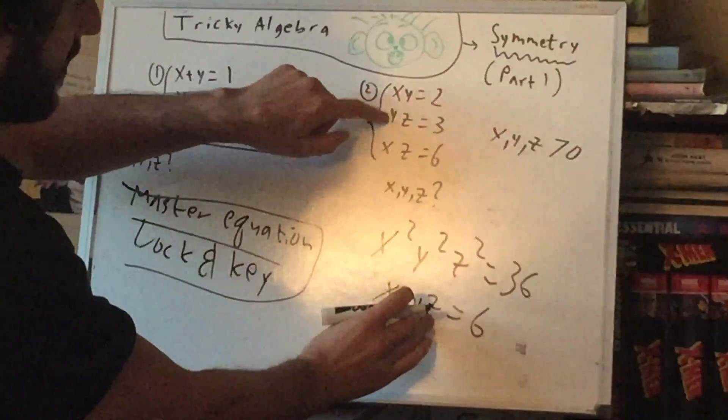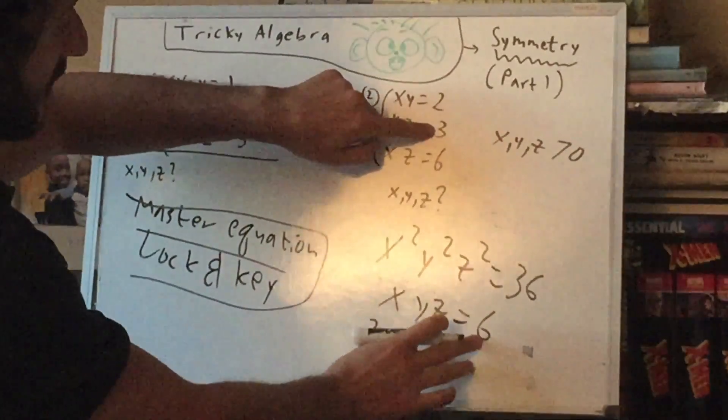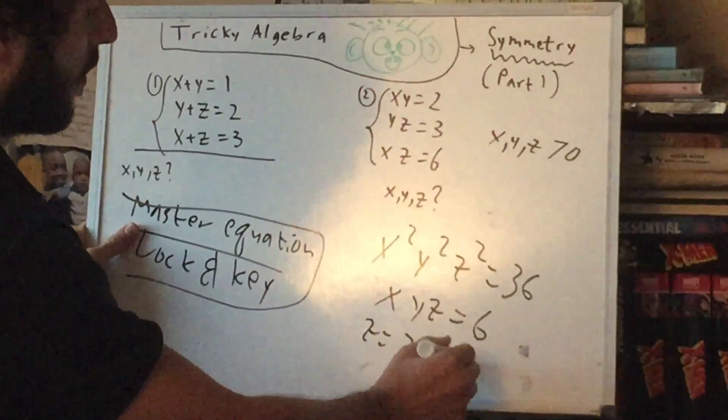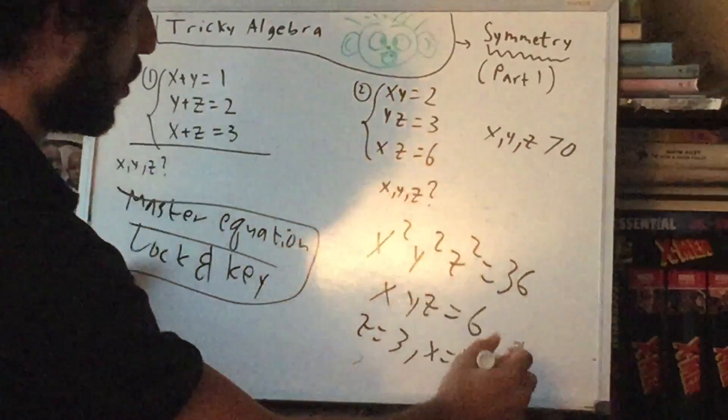Combine this with this one, that doesn't have an x, so this will get us an x. That will be a 2, 6 divided by 3. And this divided by that one, you get y equals 1.